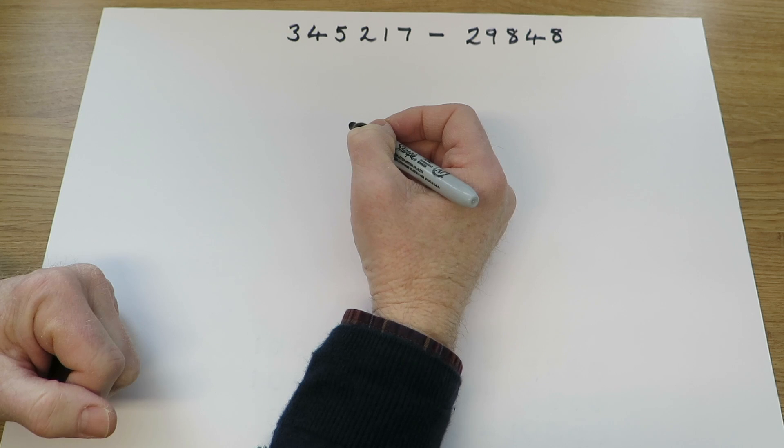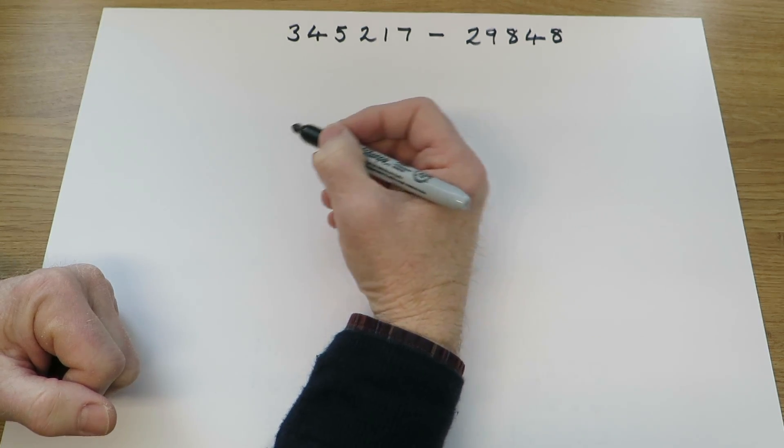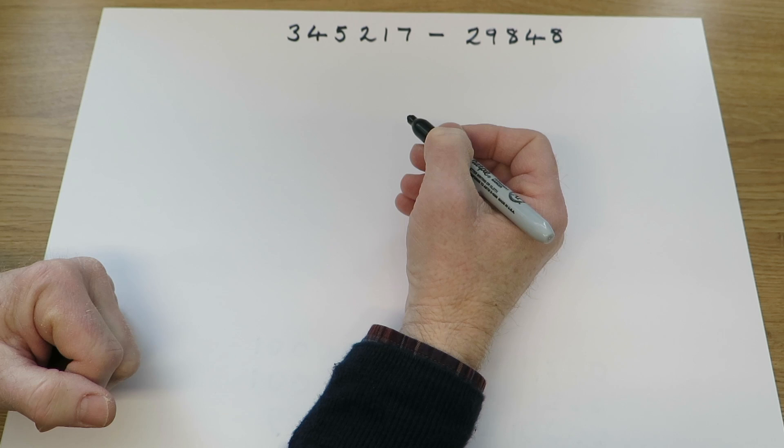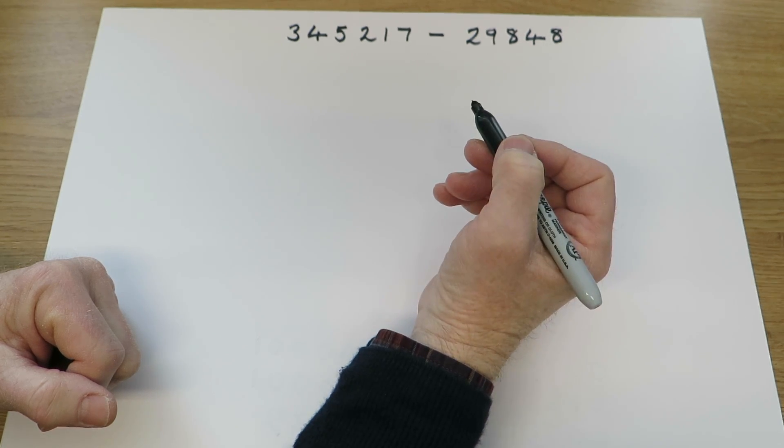The children will still work on operations involving two-digit, three-digit, four-digit, and even larger numbers, and they will continue setting numbers out in columns.